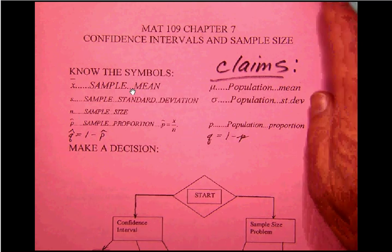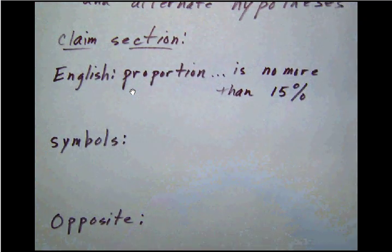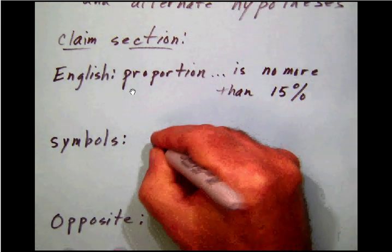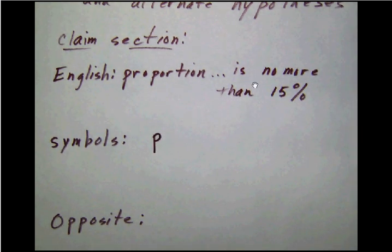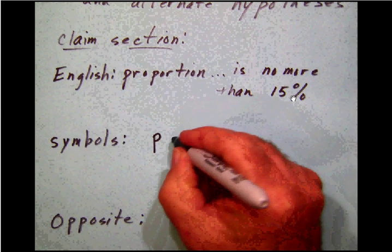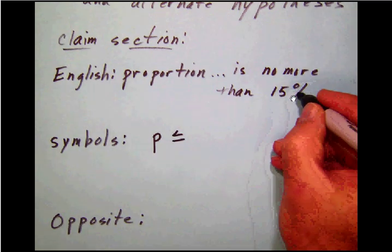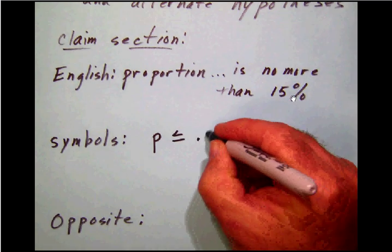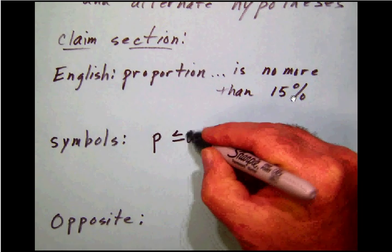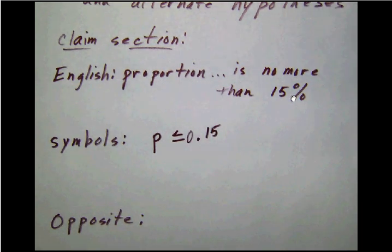So let's go over here. Back to our notes. Notice here that we're going to make the claim and symbol about p, the population proportion. Notice that it says it is no more than 15%. Now, some of these words are tricky here, but if it's no more than 15%, that means that it is less than or equal to 15%. And that 15% will typically be expressed as a decimal. So the p, the population proportion, is less than or equal to 0.15.